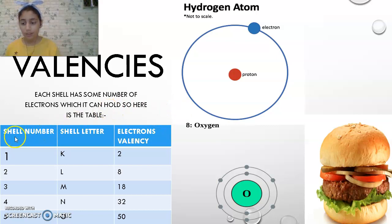In this table, you can see the valencies of the atoms. In the first shell, how many electrons can it hold? Remember, electrons are negatively charged. Every shell has a shell letter. The first shell has the shell letter K, and its electron valency. Electron valency means the number of electrons it can hold. That goes like this.